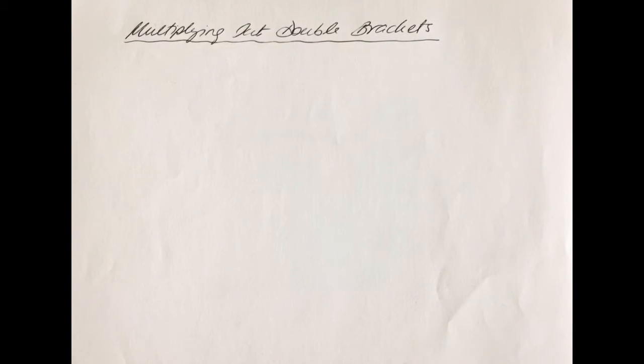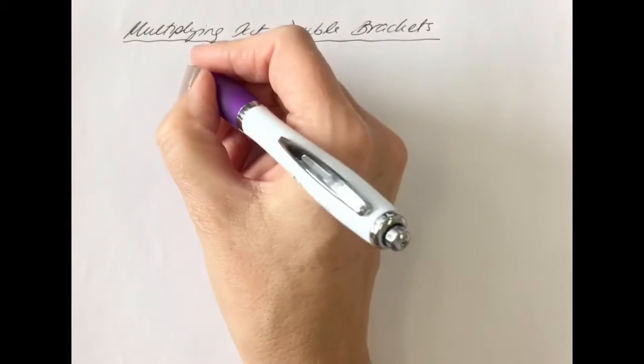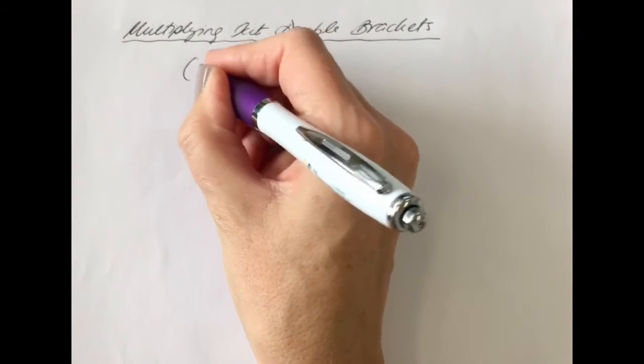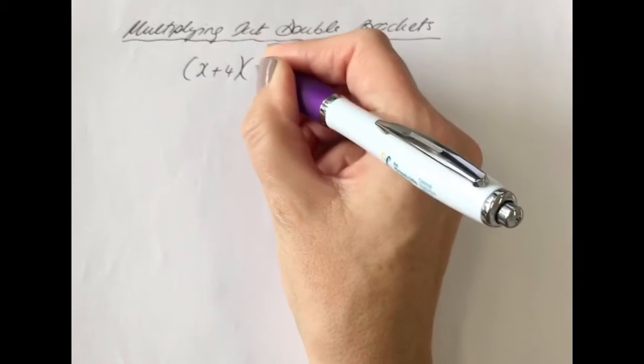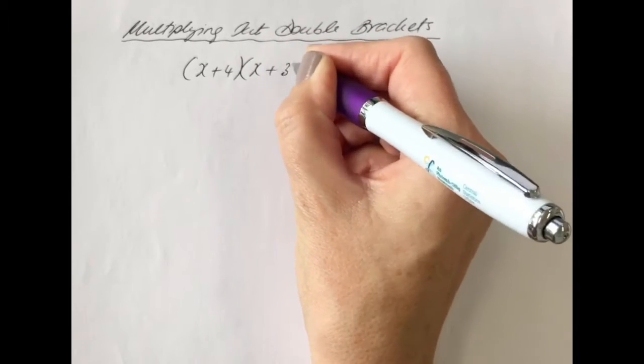In this video we're going to do a little recap on how to multiply out double brackets. So let's say you have x plus 4 in one bracket and x plus 3 in the other.